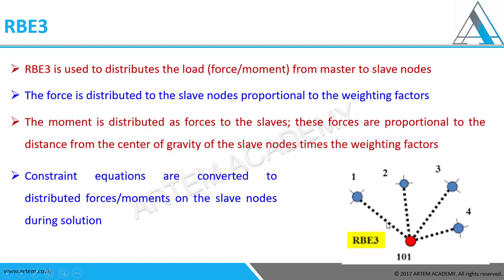Unlike CE-rigid, whatever load we apply in RBE3, it will get transferred according to the distance of the node using a weighted average. If we apply a load in the positive Y direction, it will be distributed based on weighted average according to the distance of each node. Moment is distributed as force to the slave nodes - these forces are proportional to the distance from the center of gravity of the slave nodes times the weight factor. So whenever we apply a force to the center master node, it will automatically calculate the weighted factor according to the distance and direction, and transfer the force accordingly.